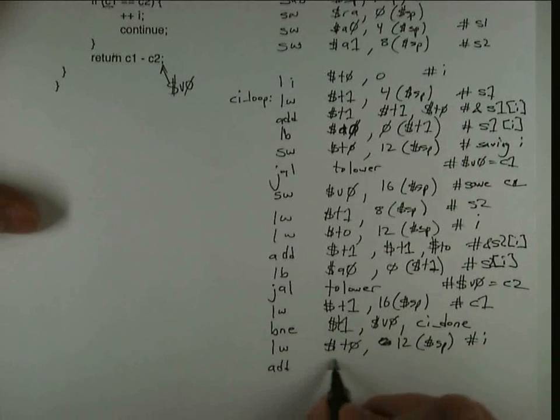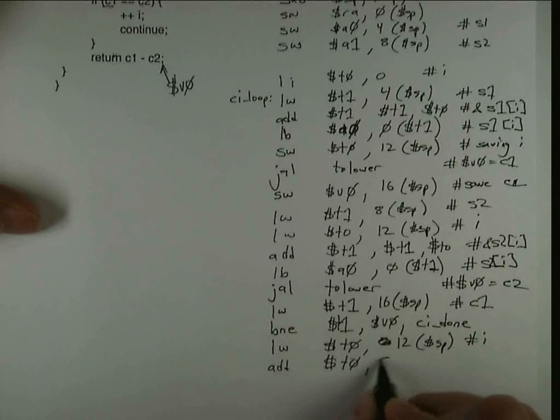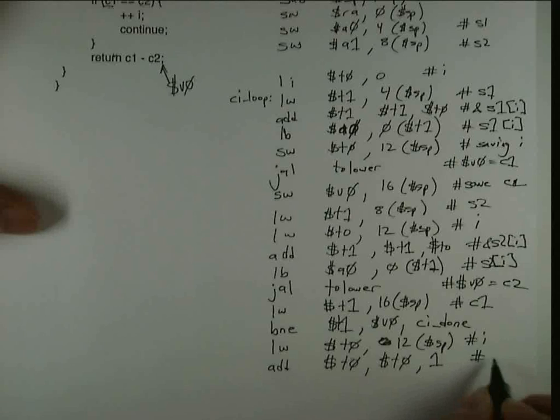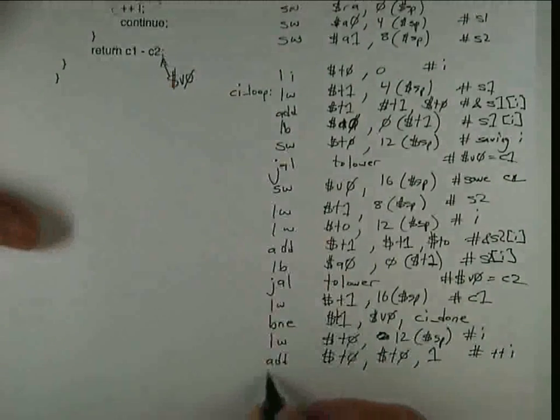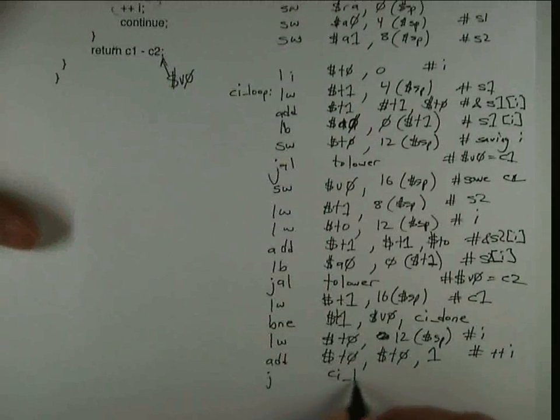And I'm going to increment it by adding 1 to it. And at this point, we've handled this. And so we're ready to do the continue, which is just a jump back to CI loop.